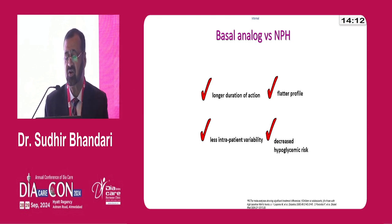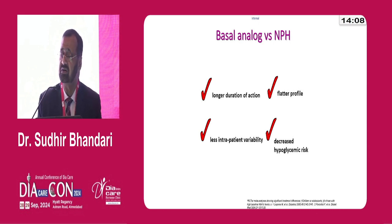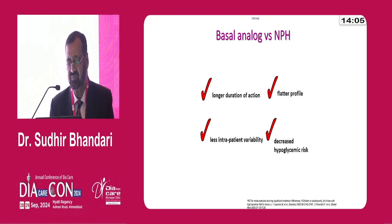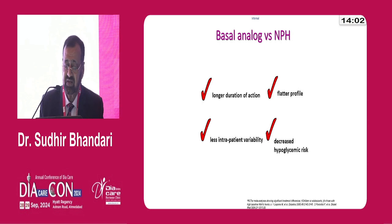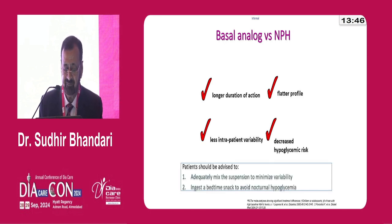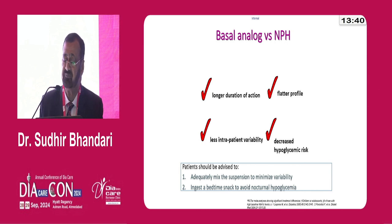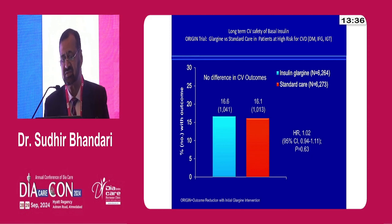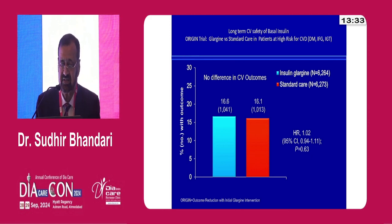What are the strengths of basal analogs? Traditionally they offer longer, flatter action profile on basal insulin, less intra-patient variability, and decreased hypoglycemia risk — which is most important. We take time to convince the patient to start insulin, and with this strength of decreased hypoglycemia risk, faith in our advice becomes a strength. Patient suspension should be adequately mixed to minimize variability. Another strength is the long-term CV safety of basal insulin, well depicted in the ORIGIN trial, also lending strength to the use of basal insulin.